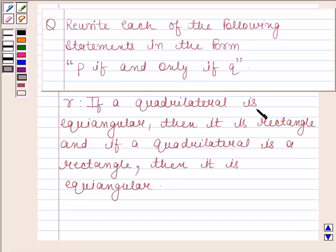The given statement is: if a quadrilateral is equiangular then it is a rectangle, and if a quadrilateral is a rectangle then it is equiangular.